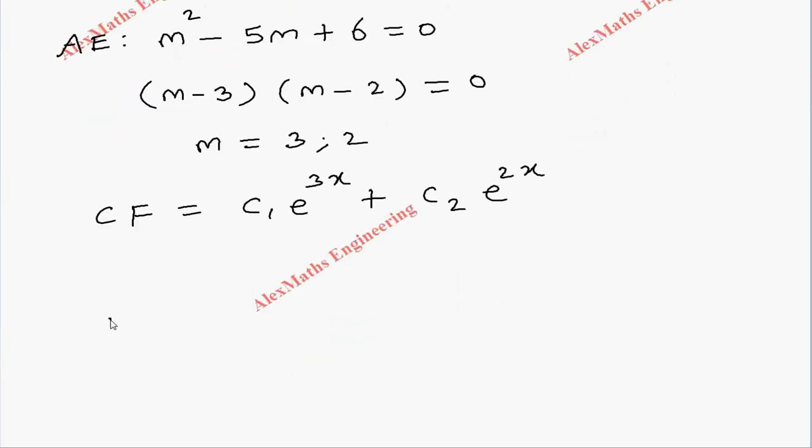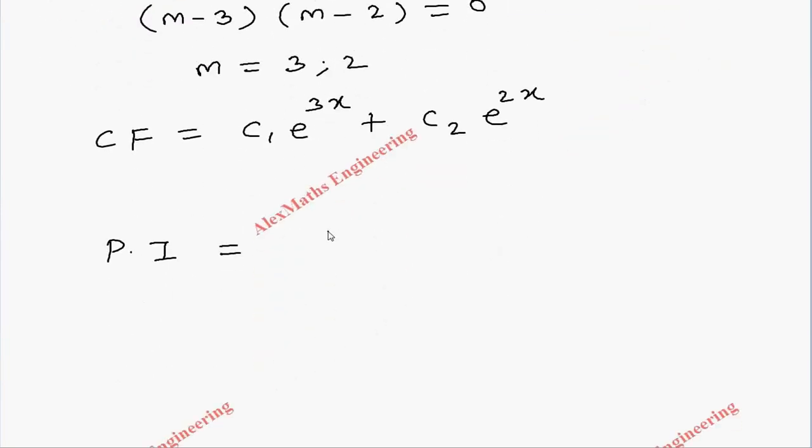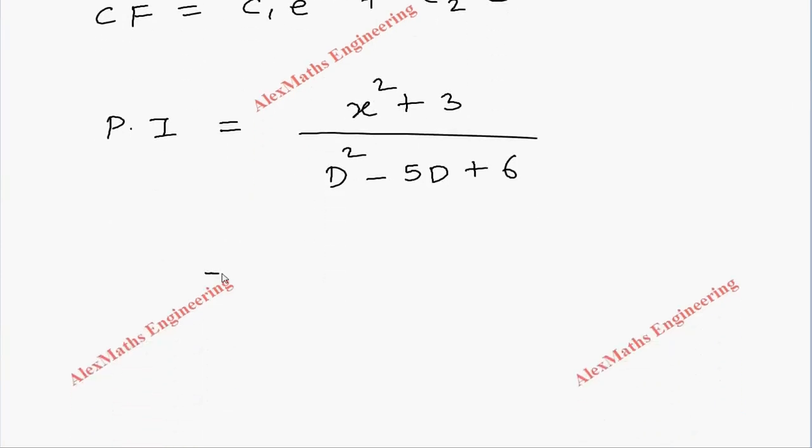Now coming to the particular integral, we have algebraic expression x² + 3 in the denominator. We have to write D² - 5D + 6. Now as per the procedure we have to take 6 common in the denominator because we need 1. So 6 times (D² - 5D)/6 + 1.